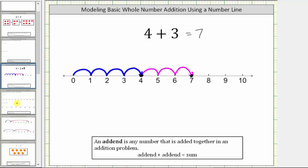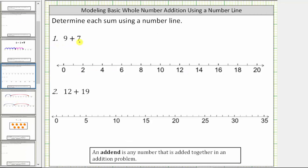Let's look at two more examples. Here we have nine plus seven. We first model nine on the number line by starting at zero and moving right nine units. We need to be careful here because notice how there are labels every two units, but there is a tick mark every one unit.